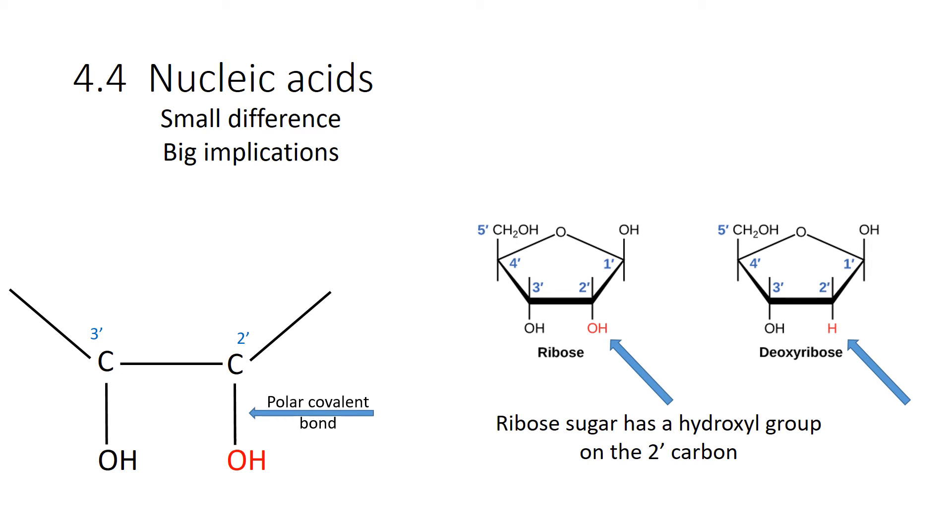So the hydroxyl group on that 2 prime carbon of the ribose makes this molecule a little less stable. Here's why. Oxygen is electronegative. That means it's going to pull the electrons to it. So it's forming a polar covalent bond between the oxygen and the carbon. Now, if I've got all the electrons near the oxygen, that end is going to be negative, and then the carbons will become slightly positive. Now here's the thing. Like charges repel. So those two positive charges, those partial charges, that's that delta symbol, means those two carbons on the 2 prime and 3 prime are slightly positively charged. So they repel each other. And because they're repelling each other, that covalent bond has more potential energy. And bonds that have more potential energy are more easy to break.